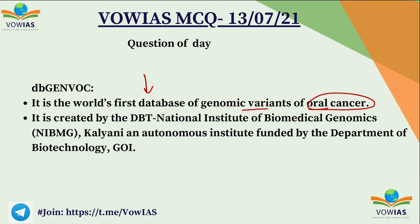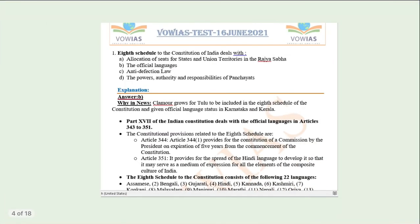It is the world's first database of genomic variants of oral cancer. Remember it is related to database and it is related to oral cancer. It was created by the DBT National Institute of Biomedical Genomics — that means the Department of Biotechnology, National Institute of Biomedical Genomics, Kalyani, which is an autonomous institute funded by the Department of Biotechnology, Government of India. Daily we are uploading five current affairs based MCQs and their solutions in PDF format — you can download from our Telegram channel.